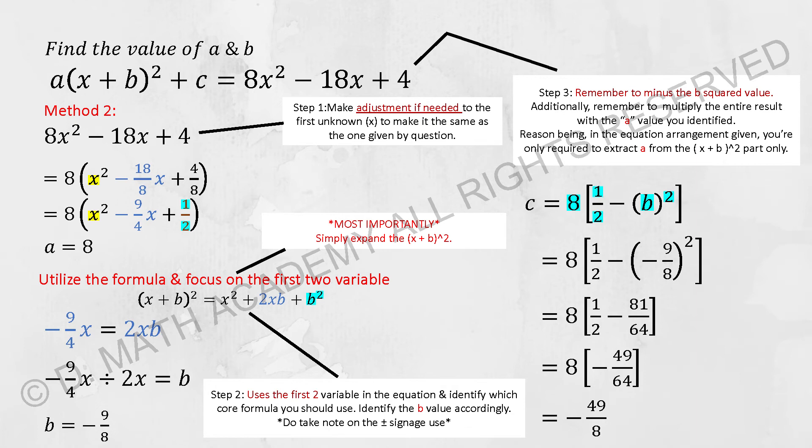So for your c, things to take note is you're required to multiply your 8 back into it, because your c over there at the unknown, there's no ac over there. So 8(1/2 - b²), you run the calculation, then you'll get your c as -49/8.